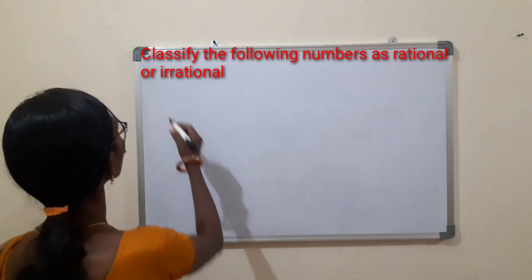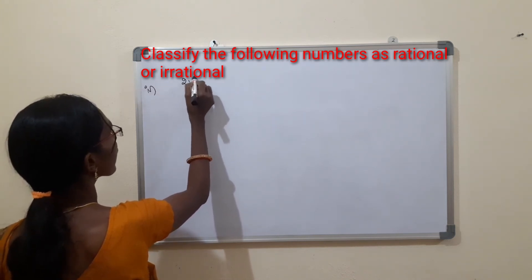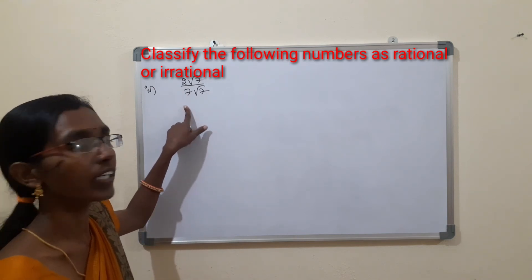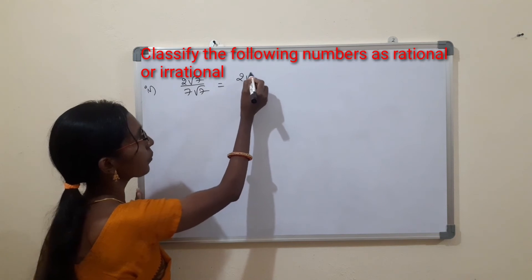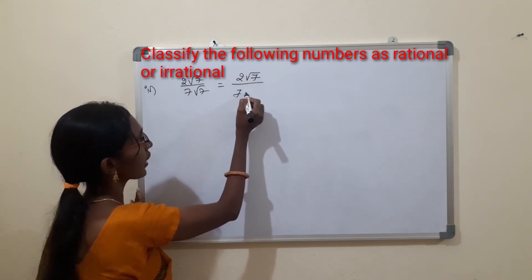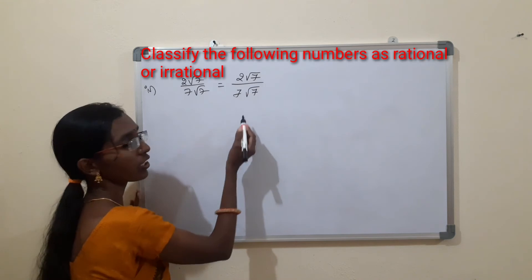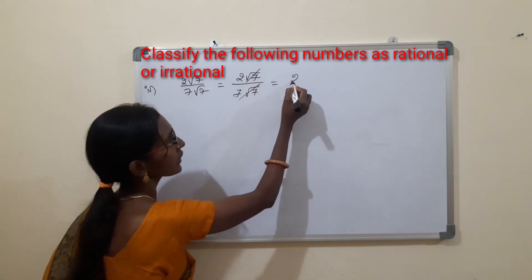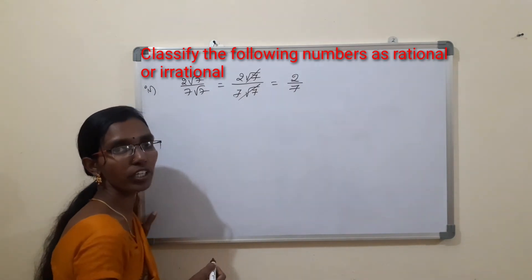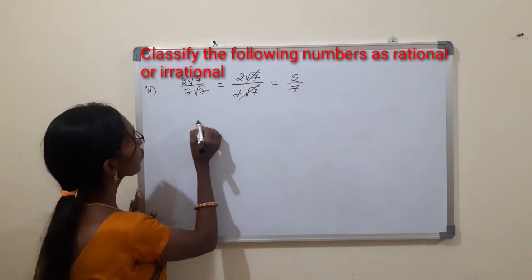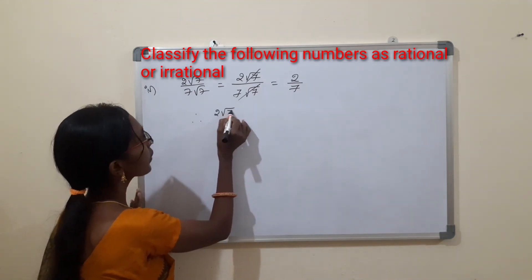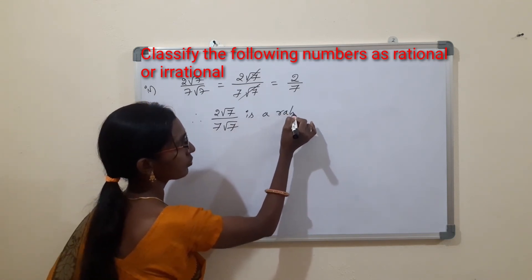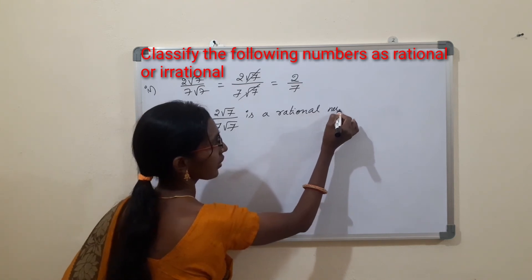The fourth one is 2√7 ÷ 7√7. In the numerator and denominator we have the irrational number √7, which can be cancelled. We get 2/7, which is a rational number. Therefore 2√7 ÷ 7√7 is a rational number.